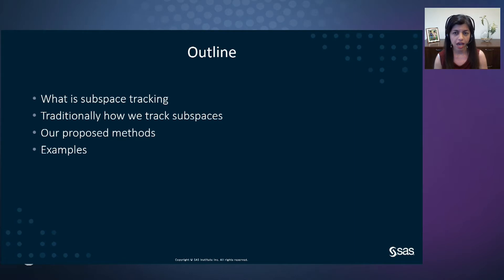First, I will talk about what subspace tracking is and why it can be used for anomaly detection. Then I'll explain traditional subspace tracking methods and measures to detect changes in the subspace. Next, I'll go over our proposed methods and measures, and I'll spend some time at the end to go over some simulated and real examples to detect anomalies and degradation in industrial settings.